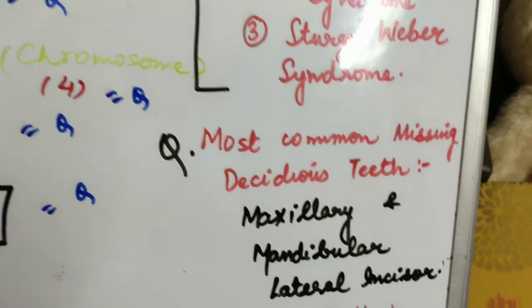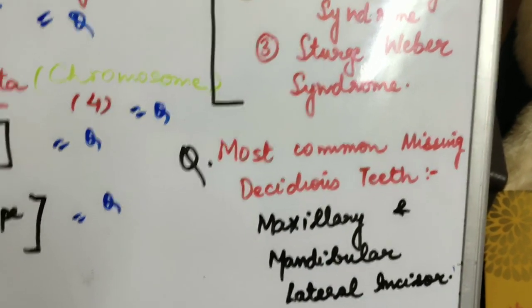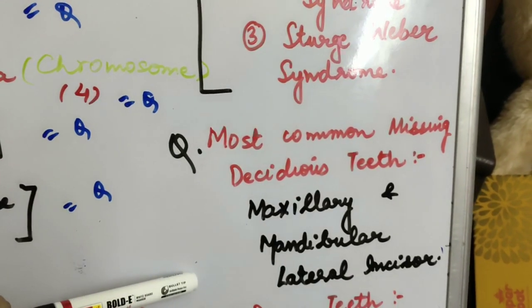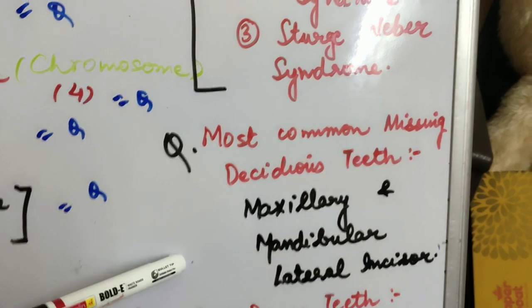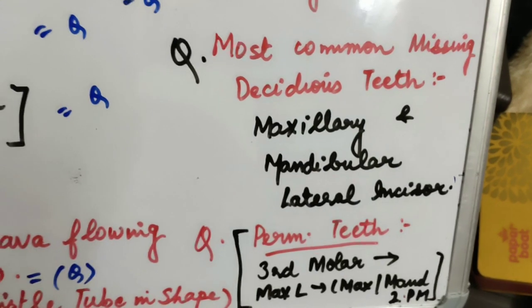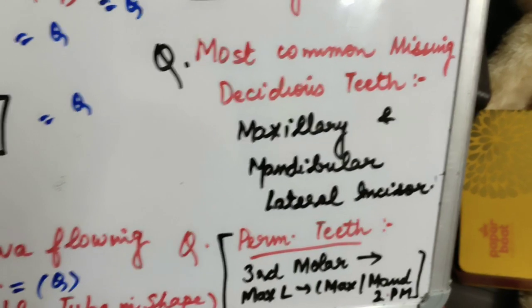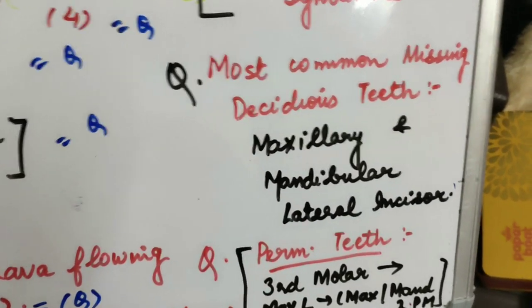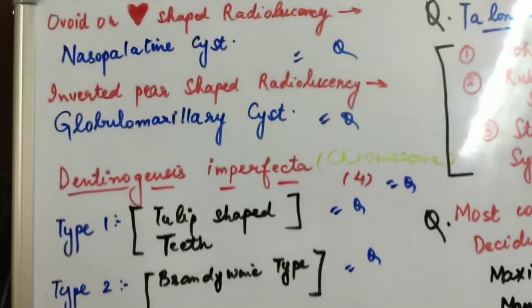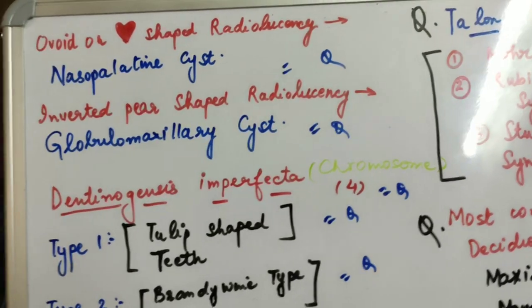Next question: most common missing deciduous teeth. Now in deciduous, we get confused whether it's lateral or which tooth is missing. In case of deciduous, the most common missing teeth is maxillary and mandibular lateral incisor. In case of permanent teeth, the most common missing teeth is third molar, followed by maxillary lateral incisor, followed by maxillary and mandibular second molar. So guys, these are the most important questions, and all the questions are from your recent papers that you must remember by heart. Thank you.